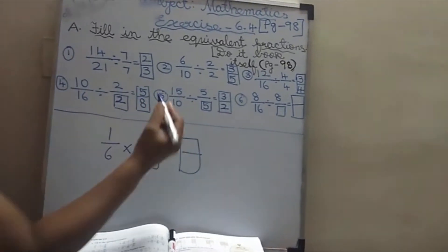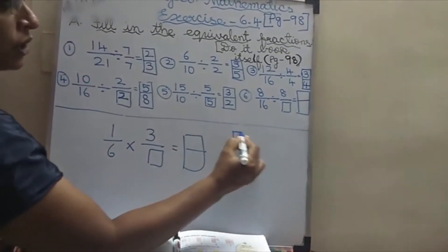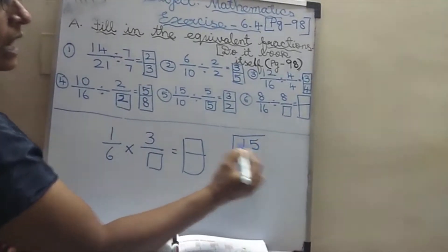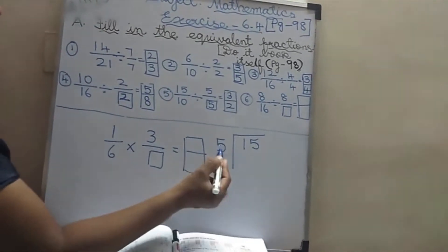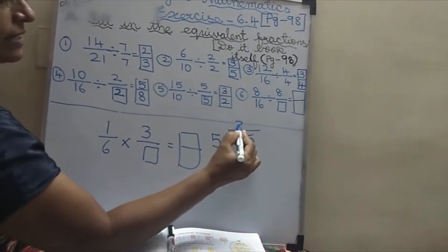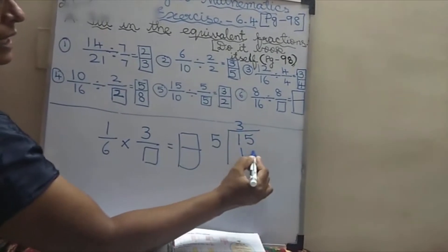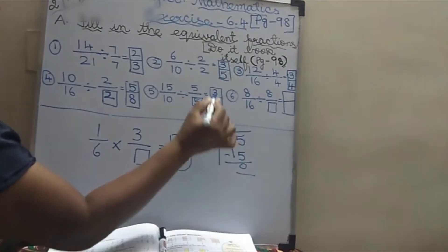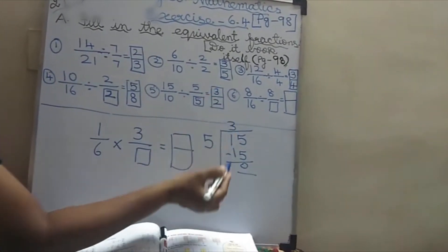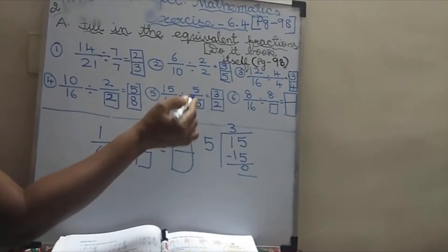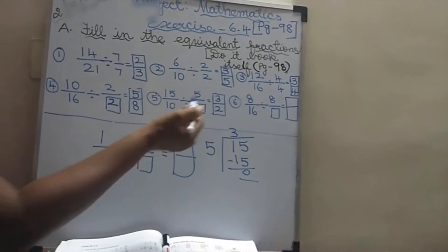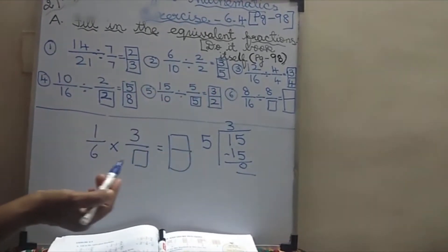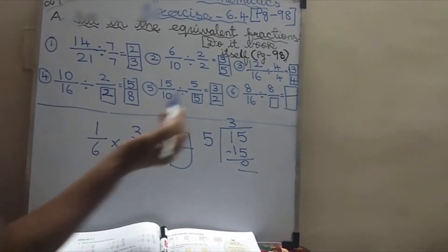Otherwise, you have to divide like this — put 15, then 5, the same thing. 5 3s are 15, so 3 is here. If you are thorough in tables, you can do directly like that so that it will be very easy for you.